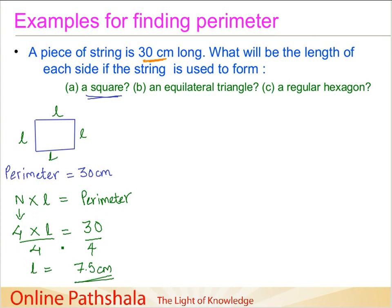Therefore, the length of a square that I want to form using this 30 cm string is going to be 7.5 cm. Now similarly, we can apply this concept for an equilateral triangle.